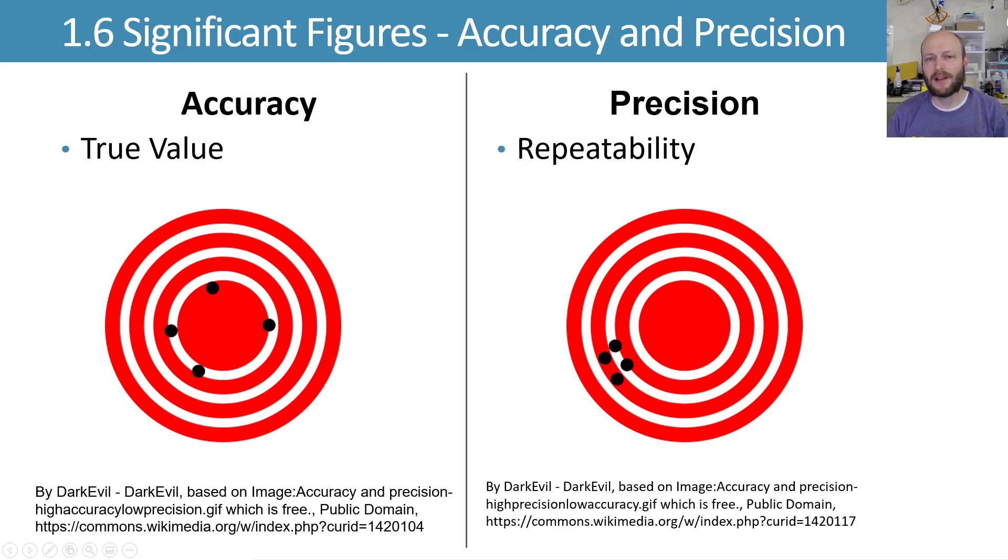When considering measured quantities, it's useful to think about how good is this measurement really? Two concepts that help with that are the idea of accuracy and precision, which colloquially just get used interchangeably to mean the same thing. Accurate, precise, it's the same. But in technical terms, it's nice to have these as two separate concepts, and so that's what we'll talk about here.